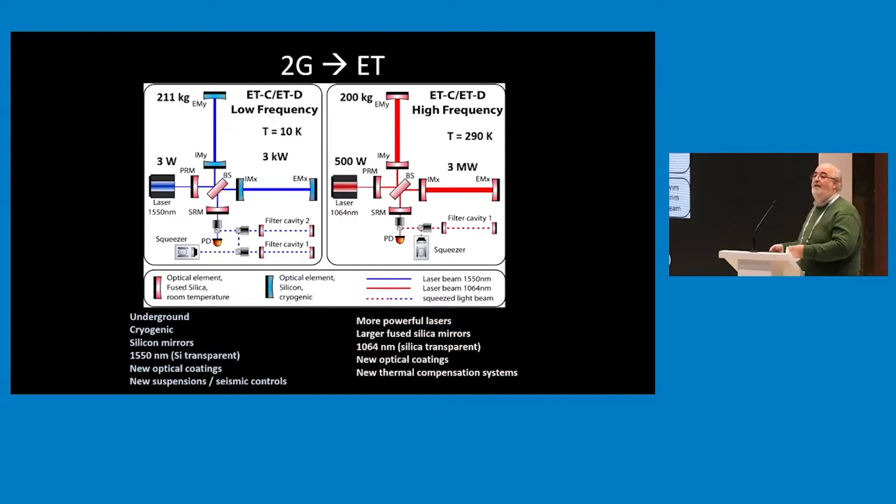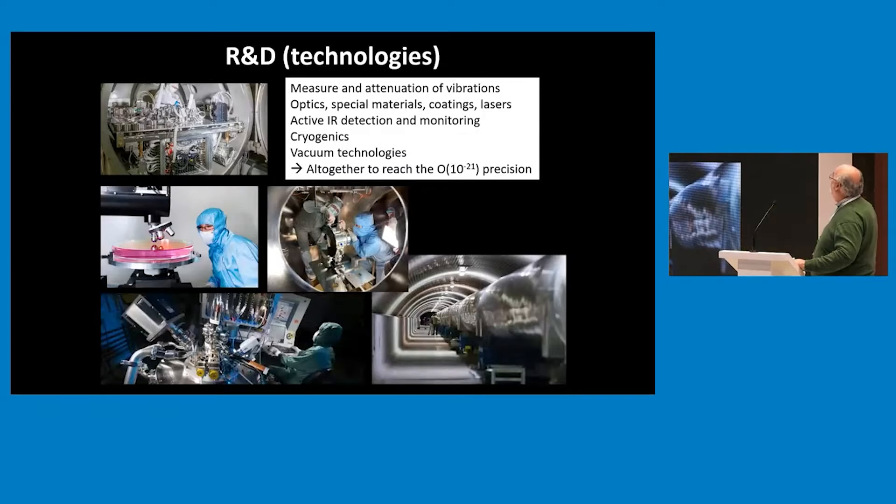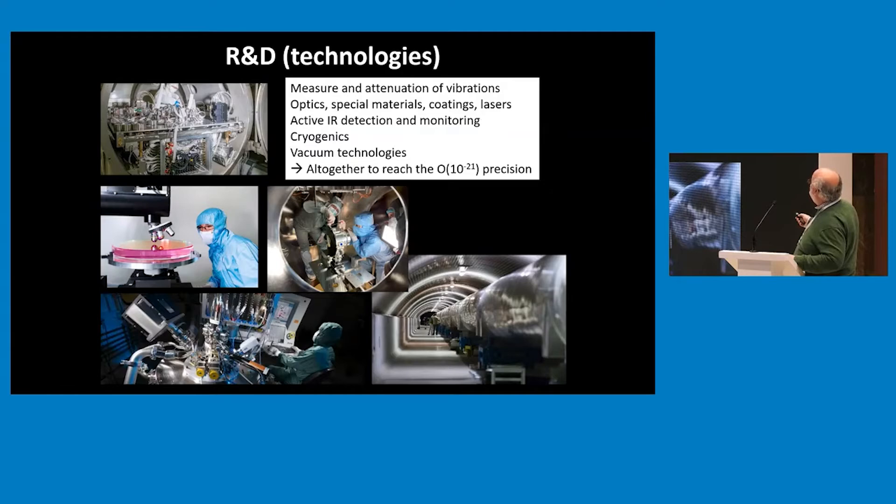If you want to go to high frequency, what you have to do is a much more powerful version of what we have now, with much more powerful lasers, much larger mirrors. At a given point, you need to take care of the fact that very powerful lasers will hit too much the mirror, so you have to have a compensation system that corrects the curvature dynamically. There's a lot of R&D that has to be done in terms of attenuation, vibration, optics, materials, coatings, lasers, but also active detection and monitoring, cryogenics, vacuum technologies, all together to reach the desired 10 to the minus 21 sensitivity.